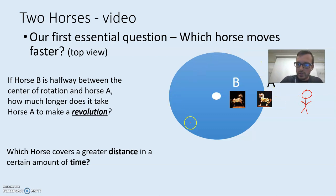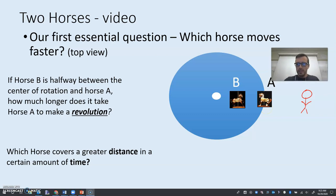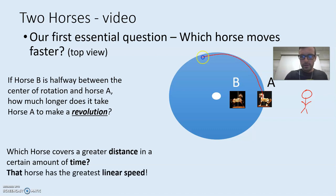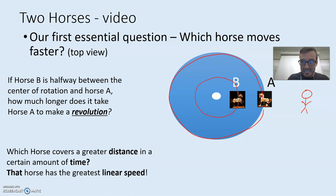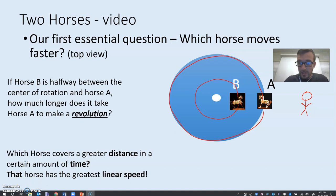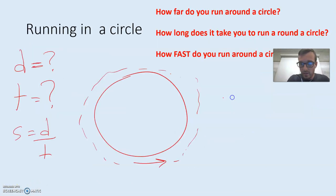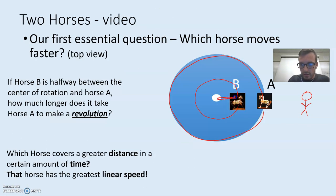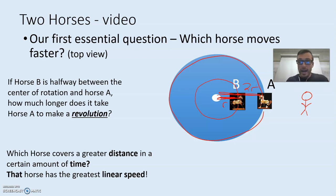Sure, you would both complete a circle in the same amount of time, but consider this: which horse — horse A or B — covers a greater distance? This horse would have to go all the way around this huge circle, but horse B would only be going around a small circle. Horse A would cover double the distance. If horse B is at a radius of R and horse A has a radius of 2R, it has double the radius and it's going to cover double the distance — it's going to have a faster speed.